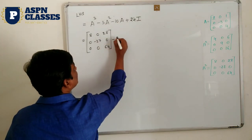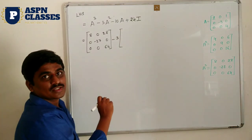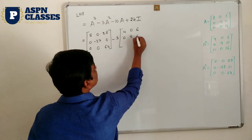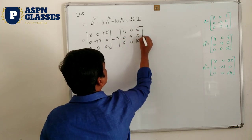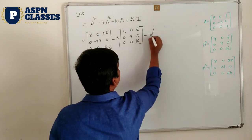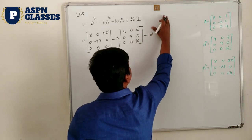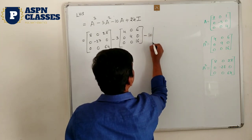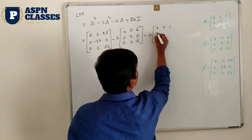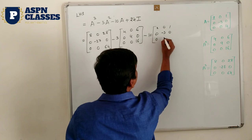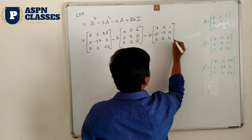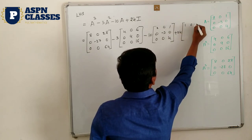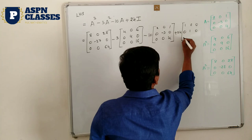Minus 3 multiplied by A square matrix [4, 0, 6; 0, 9, 0; 0, 0, 16]. Minus 10 multiplied by A matrix [2, 0, 1; 0, -3, 0; 0, 0, 4]. Plus 20 multiplied by the identity matrix [1, 0, 0; 0, 1, 0; 0, 0, 1] — this is a 3×3 identity matrix.